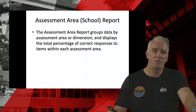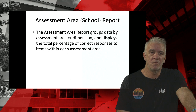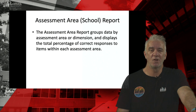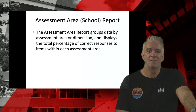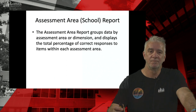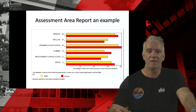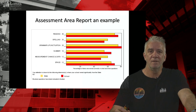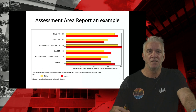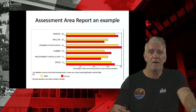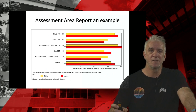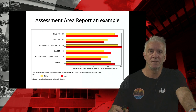There are a range of reports that come out from NAPLAN. The assessment area report groups data by assessment area or dimension — numeracy being the one we're most likely interested in — and displays the total percentage of correct responses to items within that area. So you can see that one groups them by reading, spelling, and so on, and down at the bottom we have number, measurement, and space — the three broad strands of the numeracy assessment.